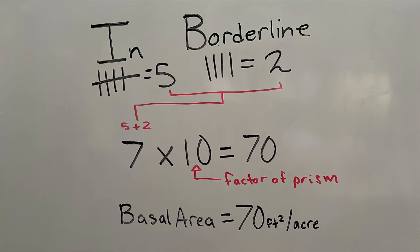Once we add up those two counts, we have to determine the factor of our prism. In our case, our prism's factor was 10 and it was using imperial units, which was feet squared per acre.